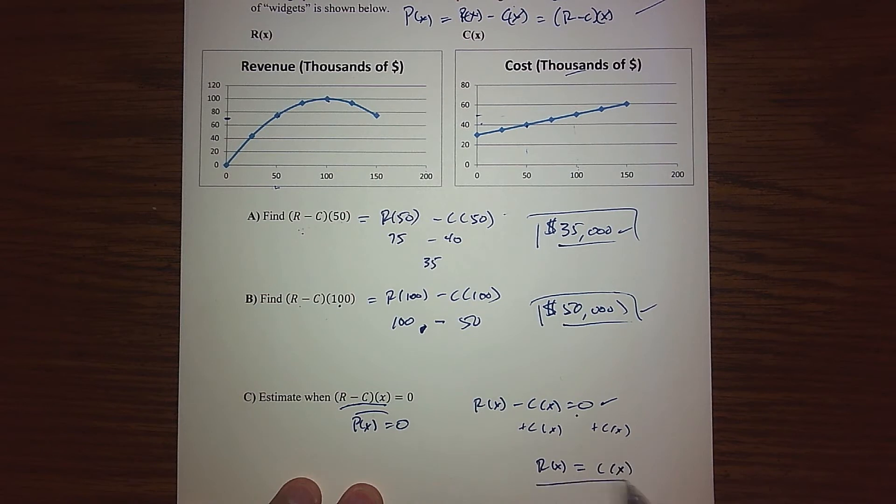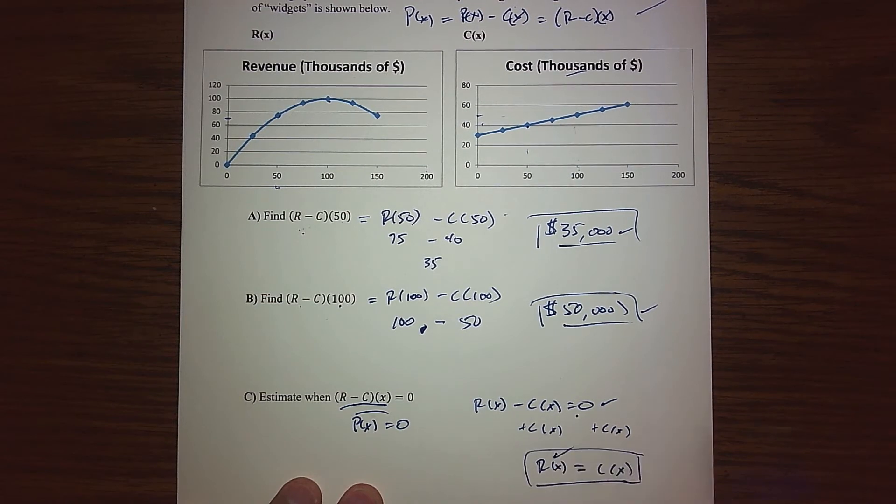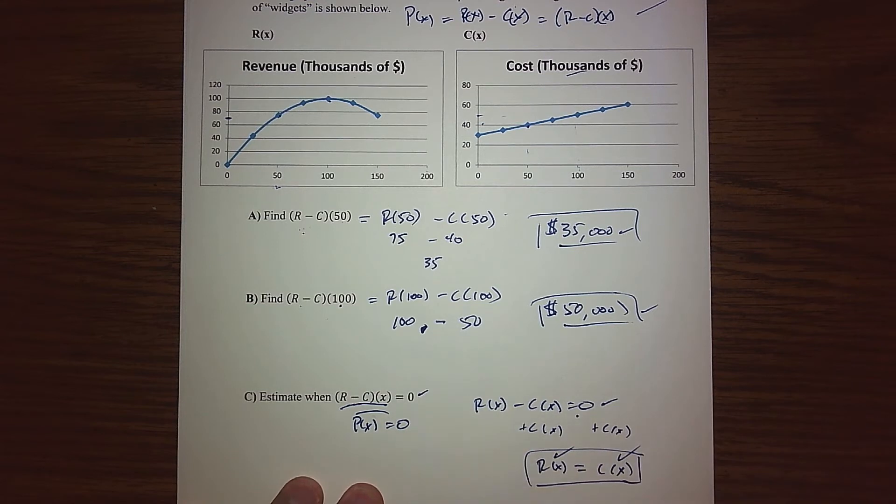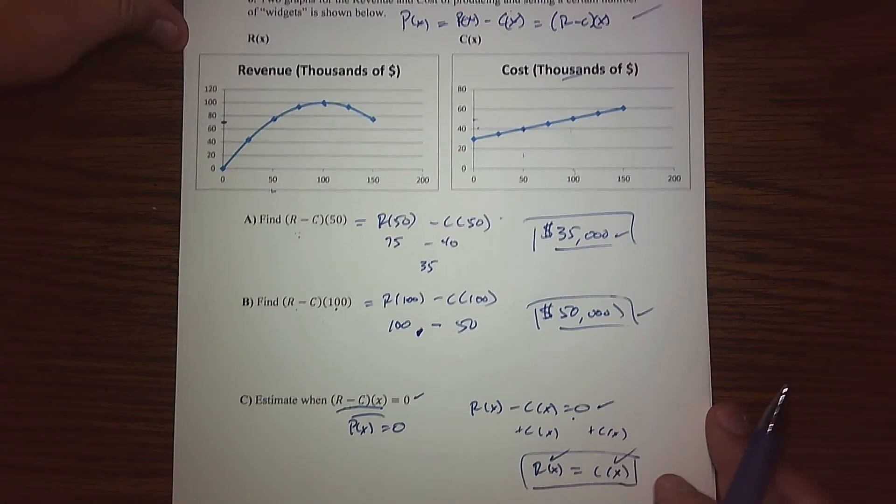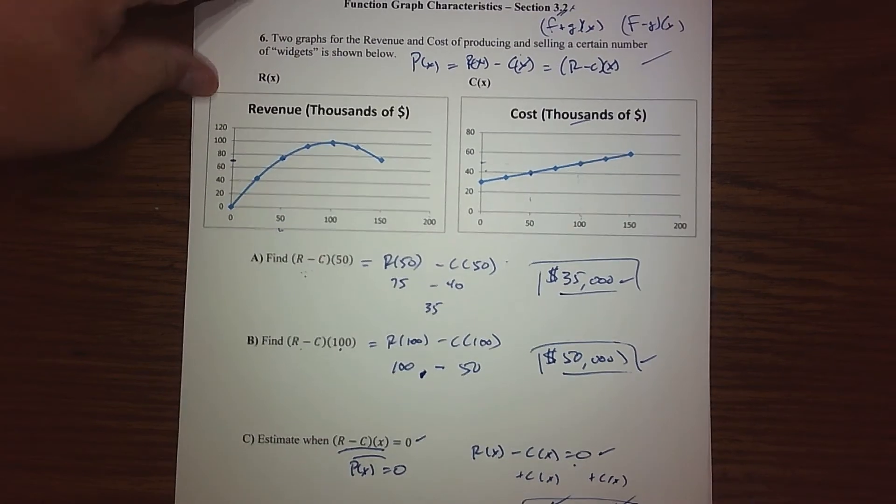If I add C(x) to both sides, we're trying to find when does my revenue function equal my cost function. If I can find when they're equal, then I basically have a profit of zero - the money coming in and the money coming out are exactly equal, so my profit is zilch.